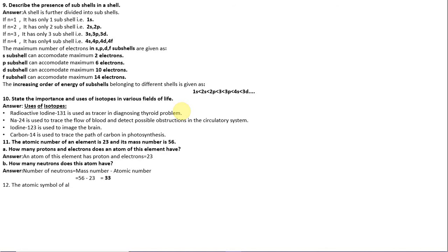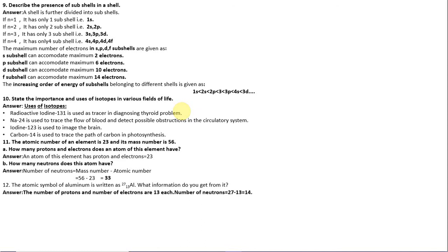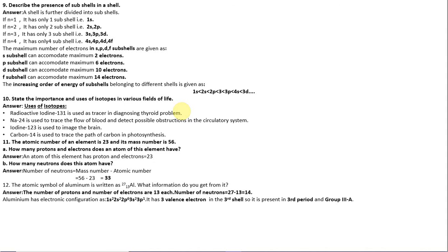Question 12: The atomic symbol of aluminium is written with atomic number 13 and mass number 27. The number of neutrons equals mass number minus atomic number: 27 minus 13 equals 14. The electronic configuration is 1s2, 2s2, 2p6, 3s2, 3p1. It has three valence electrons in the third shell, so aluminium is in the third period and group 3.